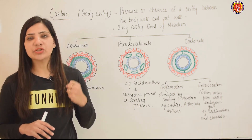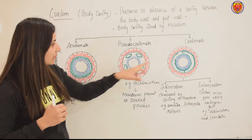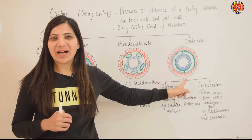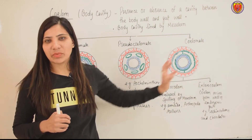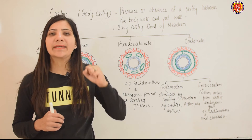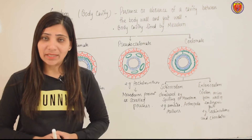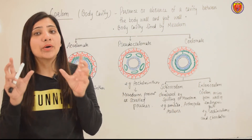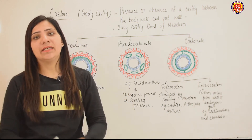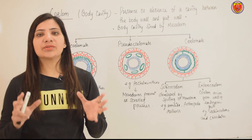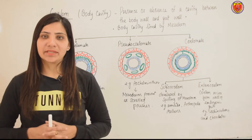Ab in teen germ layers ke beech mein, mesoderm jo hai, woh apne aap ko divide kar leti hai. Mesoderm green color ki hai — mesoderm ka aadha part endoderm ke paas hai, aadha part ectoderm ke paas hai. Beech mein khali space hai. Yeh khali space aapki body ki cavity banata hai. Agar ek body ki cavity nahi hoti, to organs yahaan pe survive nahi kar paate. Aapke andar jo cavity hai, yahaan pe saare organs present hain — liver, stomach, and intestine. This cavity is formed by the division of mesoderm.